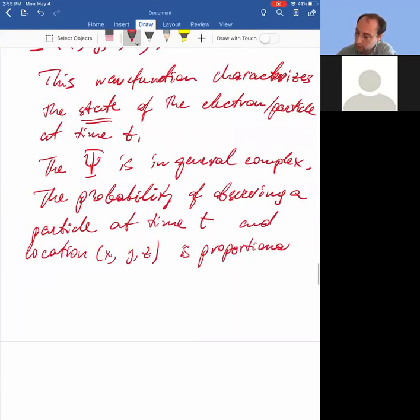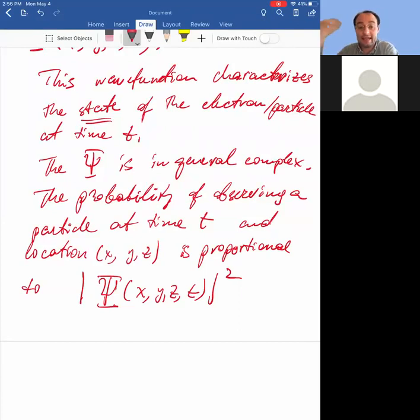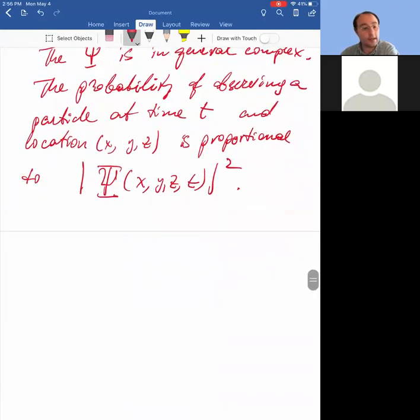...is proportional to the amplitude of the wave function at that position and that time, quantity squared. The square of its amplitude. Sometimes they also call the ψ itself the probability amplitude. That's a little bit older language. They call ψ not wave function but the probability amplitude, because its amplitude squared gives the probability. But we'll just call it the wave function. That's the modern language.